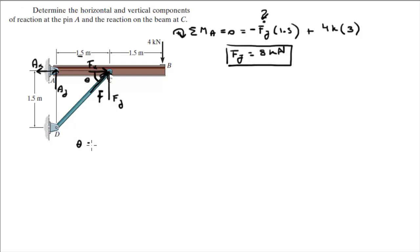You know that theta is equal to the tangent inverse of 1.5 over 1.5. Whenever you have the tangent inverse of 1, like in this case, the angle is 45 degrees.